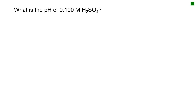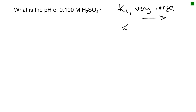We ignore the second step because K is much, much smaller — it's like adding a weak acid to a strong acid. What about sulfuric acid? We know sulfuric is strong, but only the first H⁺ is strong. Ka1 is undefined — 100% goes to product. Ka2, which we look up, equals 0.012. Unfortunately, Ka2 is neither very large nor very small, so we're stuck with the quadratic on this one.